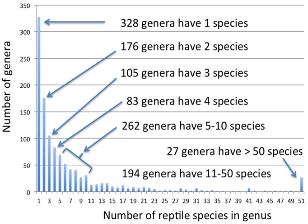In binomial nomenclature, the genus name forms the first part of the binomial species name for each species within the genus. For example, Panthera leo and Panthera onca are two species within the genus Panthera. Panthera is a genus within the family Felidae.